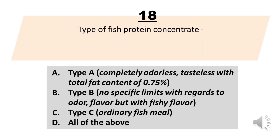Type of fish protein concentrate. A. Type A: Completely odorless, tasteless, with total fat content of 0.75%. B. Type B: No specific limits with regards to odor, flavor, but with fishy flavor. C. Type C: Ordinary fish meal. D. All of the above.